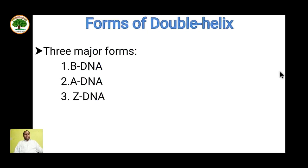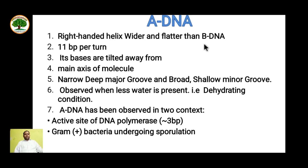Let's see the different forms of DNA double helix: A-DNA, B-DNA, and Z-DNA. A-DNA is a right-handed helix — wider and flatter than B-DNA with approximately 11 base pairs per turn. Its bases are tilted away from the main axis, having narrow deep major grooves and broad shallow minor grooves. This helix is observed when less water is present, i.e., under dehydrating conditions.